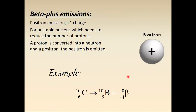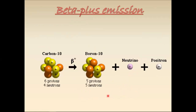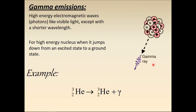For beta plus emission: from carbon to boron, a positron is emitted along with a neutrino. Beta minus emission goes from carbon to nitrogen, while beta plus emission goes from carbon to boron. Beta plus is also termed as positron emission.